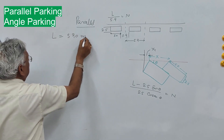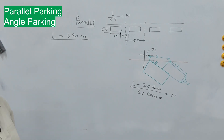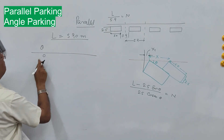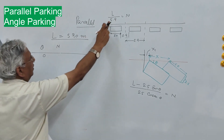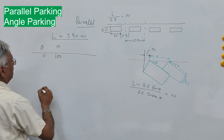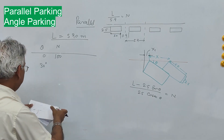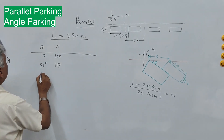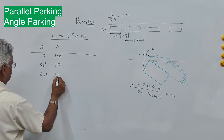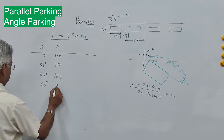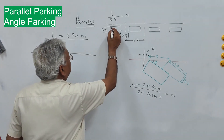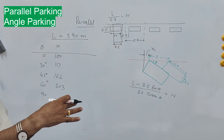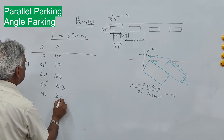Assuming a curb length of 590 meter: for parallel parking (theta = 0), N = 590/5.9 = 100 cars; at 30 degrees, N = 117; at 45 degrees, N = 166; at 60 degrees, N = 203; and at 90 degrees (perpendicular), N = 590/2.5 = 236 cars.